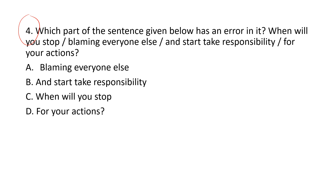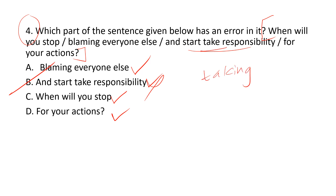The fourth question asks us to find the error in a sentence broken into four parts. 'When will you stop blaming everyone else' has no error. 'For your actions' is correct. The error is in option B: 'and start take responsibility' — this sounds odd. The correct form is 'start taking responsibility' using the continuous form. Alternatively, 'start to take' is also acceptable. Option B is the correct answer.